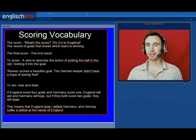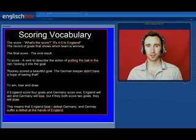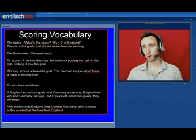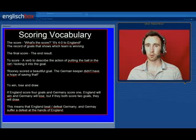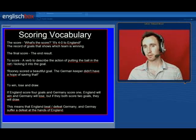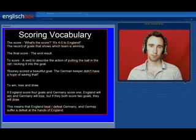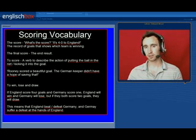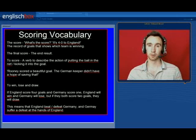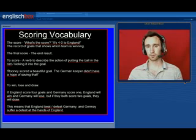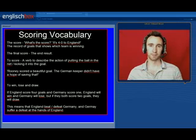The German keeper didn't have a hope of saving that — he didn't have a chance of stopping the ball. To win, lose and draw: if England score four goals and Germany score one or none, England will win the game and Germany will lose. But if Germany on the off chance score two goals and England only score two as well, they will draw — the game will be undecided and they will have to play extra time.